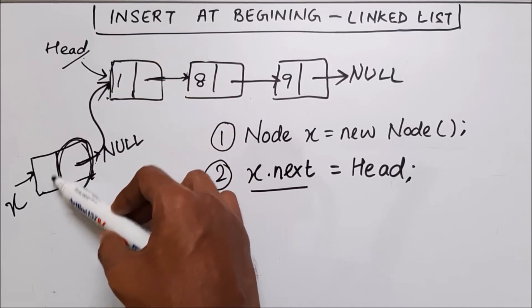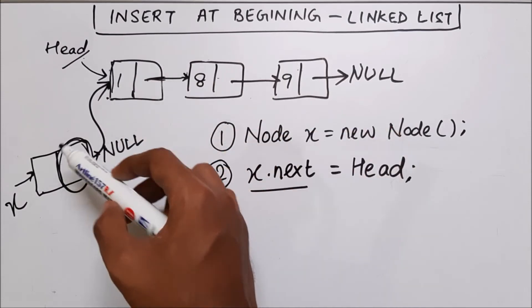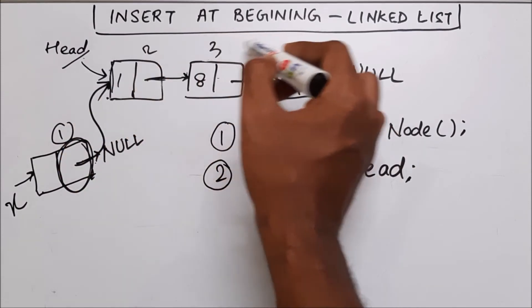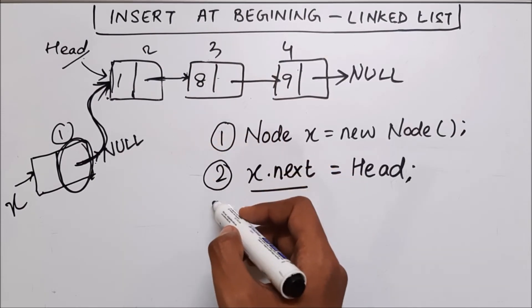Now we can see that this has become a linked list of four nodes. This is the first node, second, third and fourth.